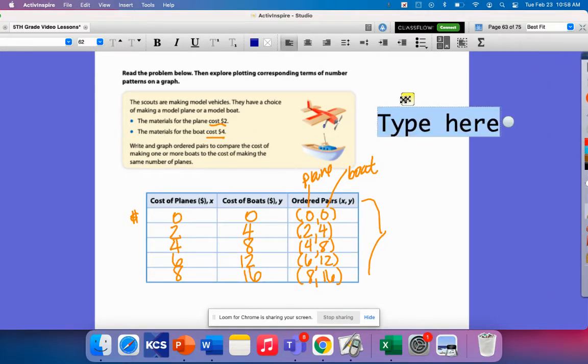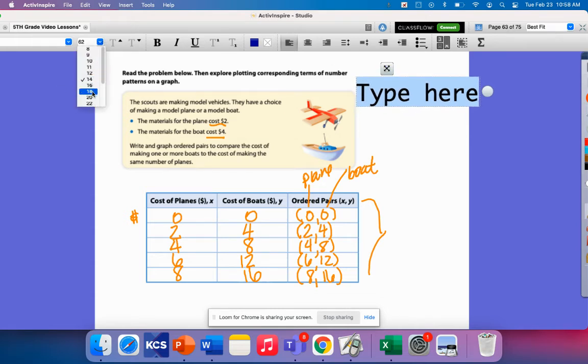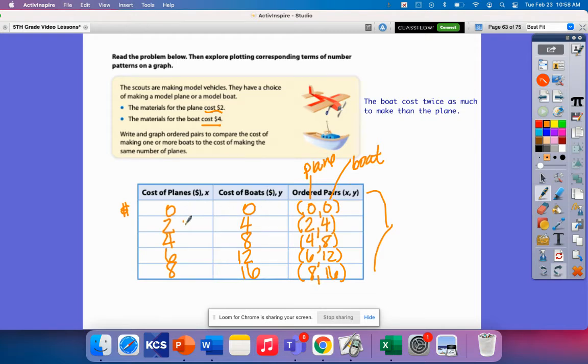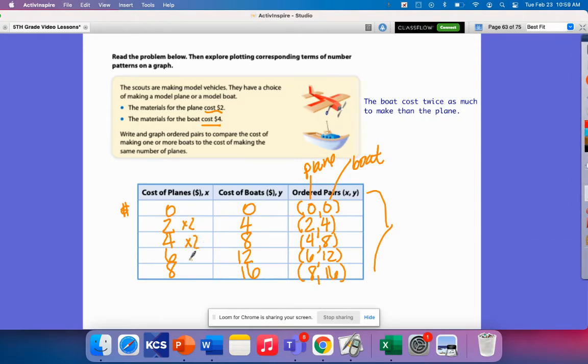So let's make a statement here. Let me make this smaller. So I think I could say that the boat cost twice as much to make than the plane. Now I could also, because if I go back over here, I know that because if I multiply these by two, I'm going to get the cost of the boat. So the cost of the boat is twice as much as what the plane cost.